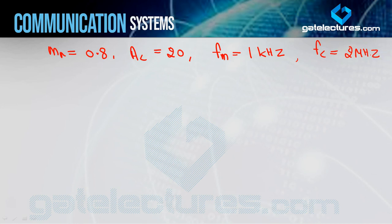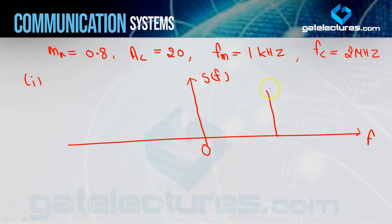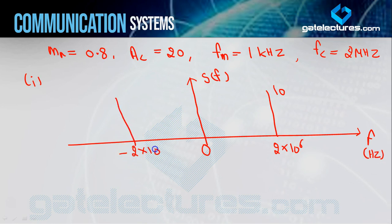Now we have all values, so let's solve the first question — the spectrum S(F) vs F. For single-tone AM, refer to the last video where the spectrum was derived. The carrier component appears as an impulse at ±fc with amplitude AC/2 = 10. So at fc = 2×10⁶ Hz, amplitude is 10, and at −2×10⁶ Hz, amplitude is also 10.